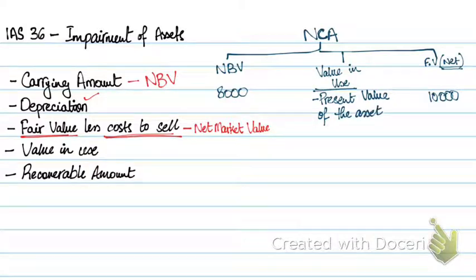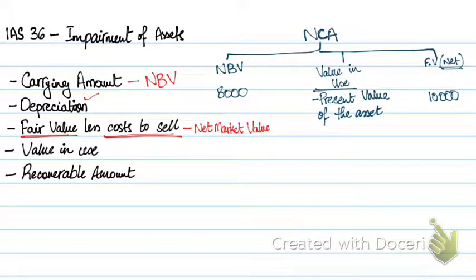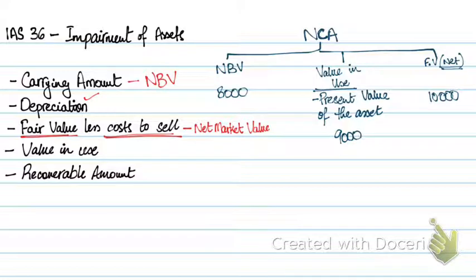It's the remaining present value. So let's say you purchased the asset with a life of 5 years and the second year has just ended — your value in use will be the net present value of the remaining 3 years. In our example, let's say the value in use is $9,000.